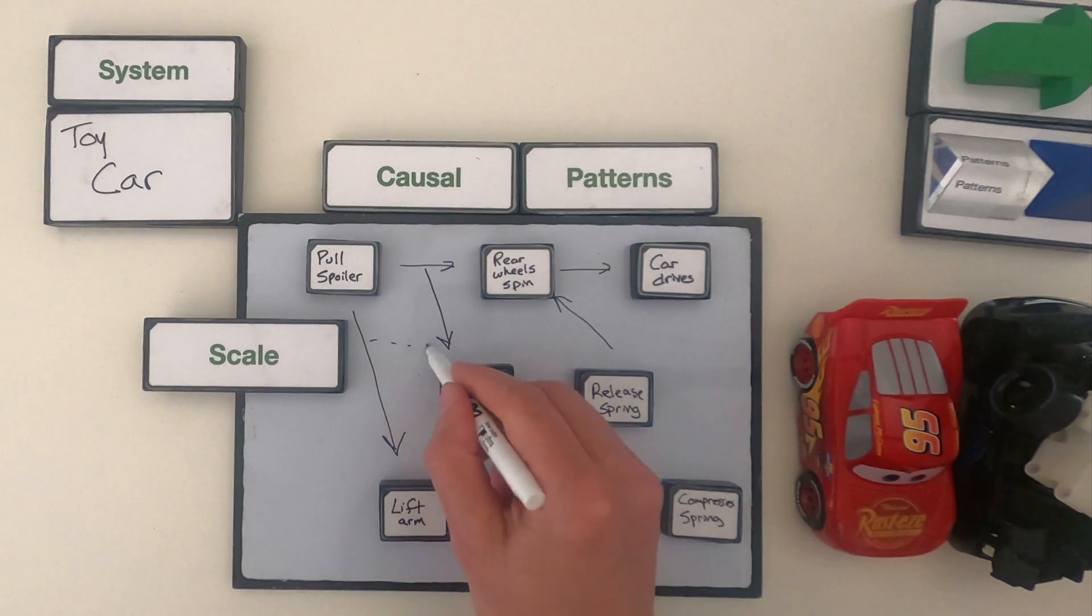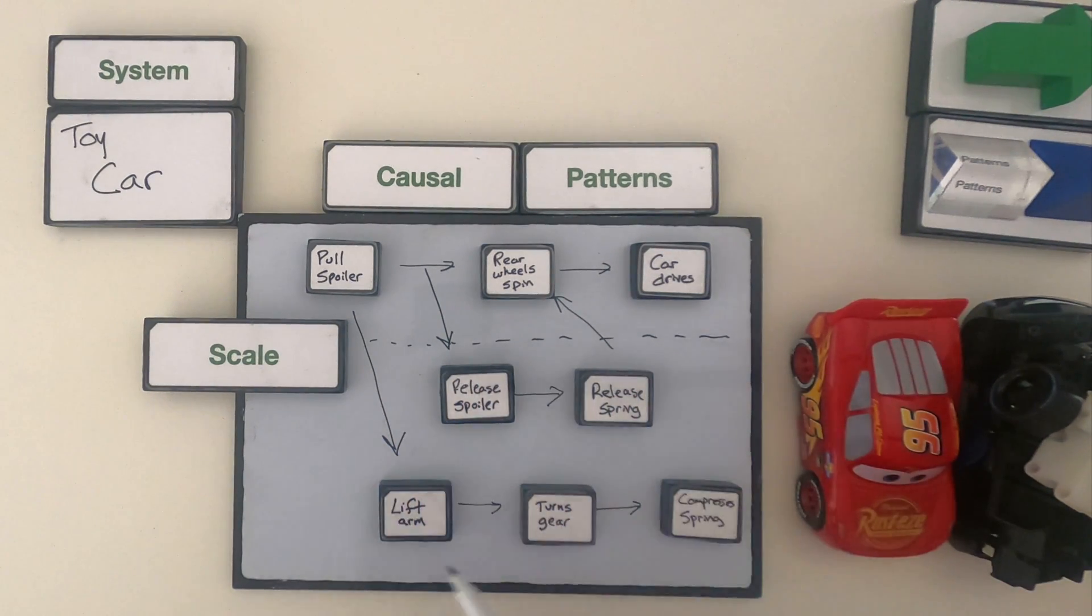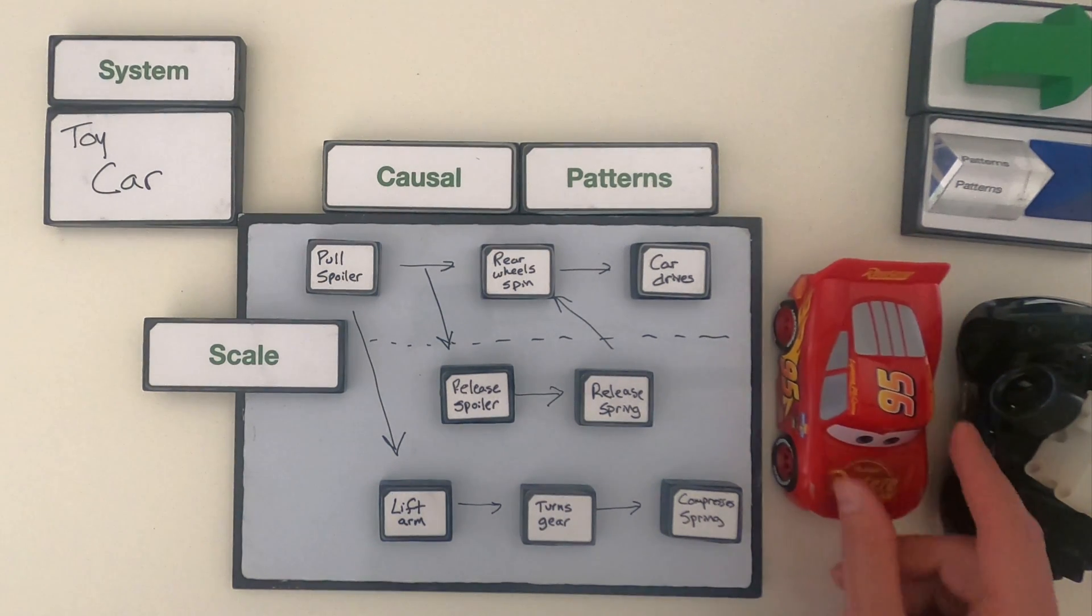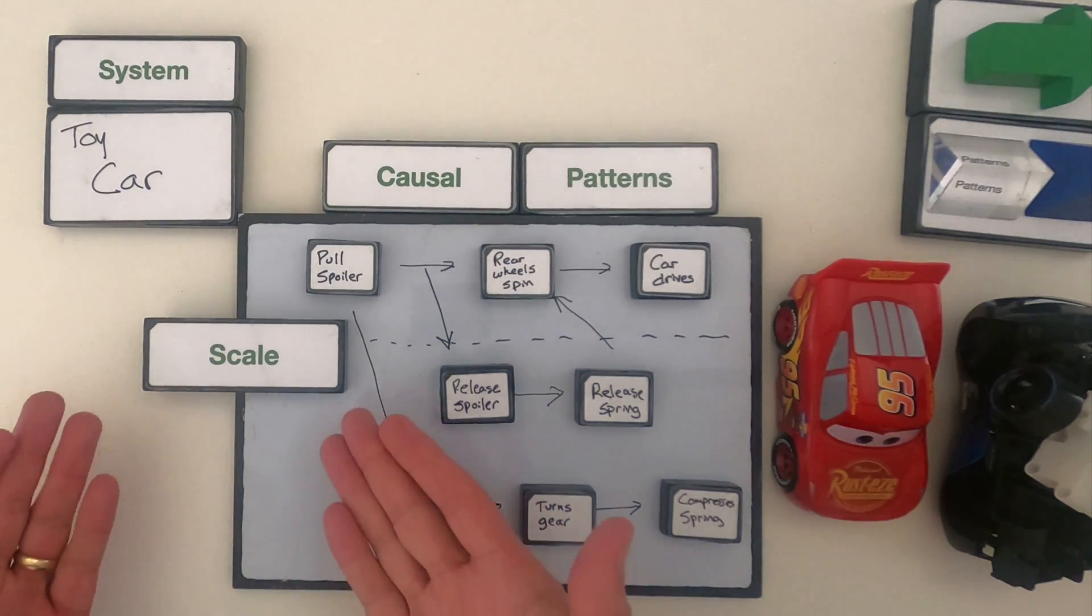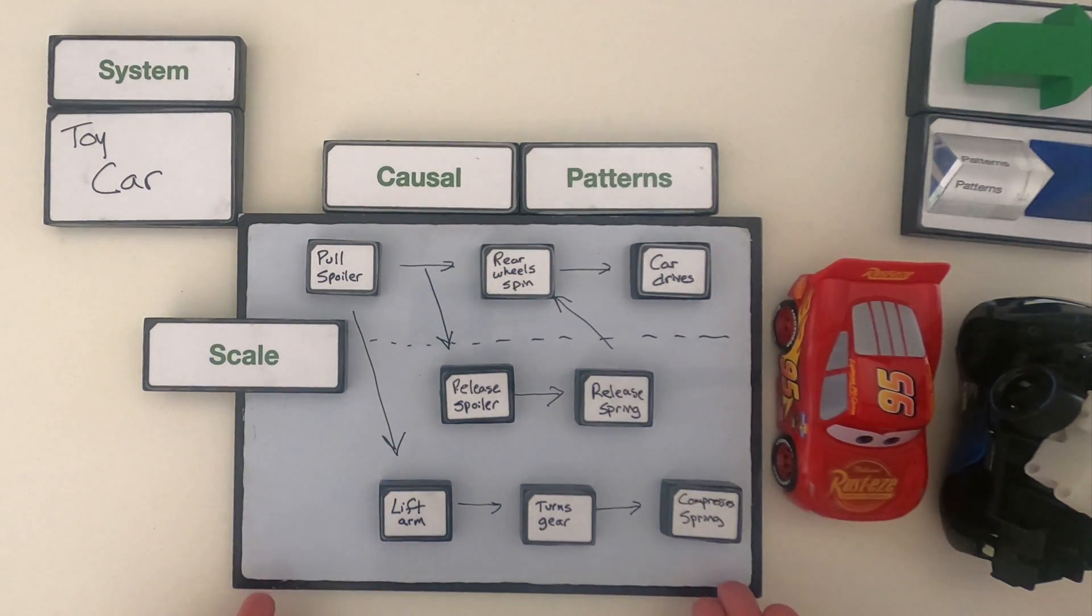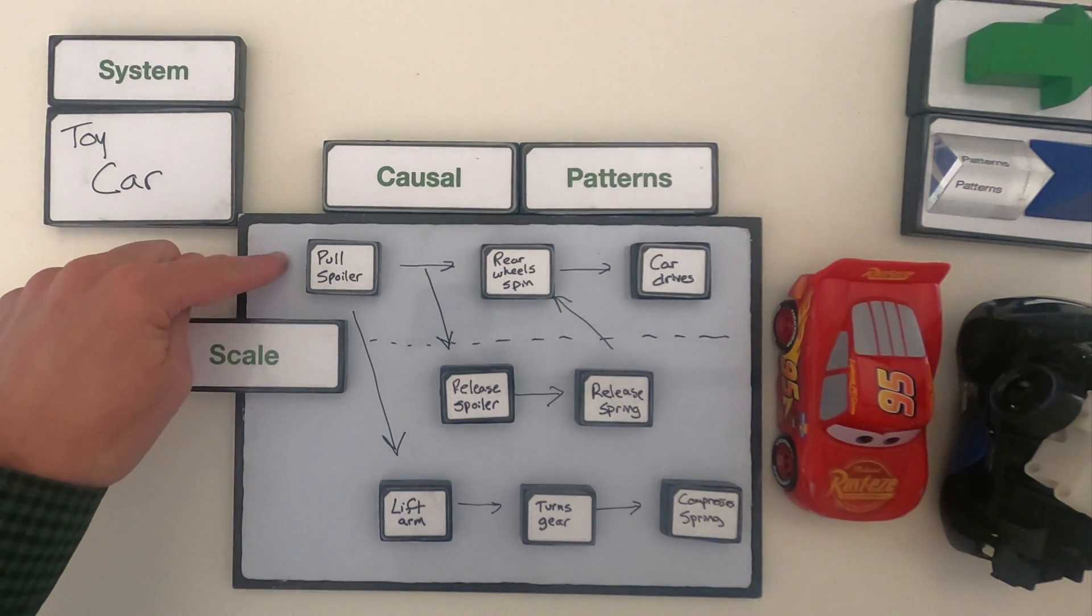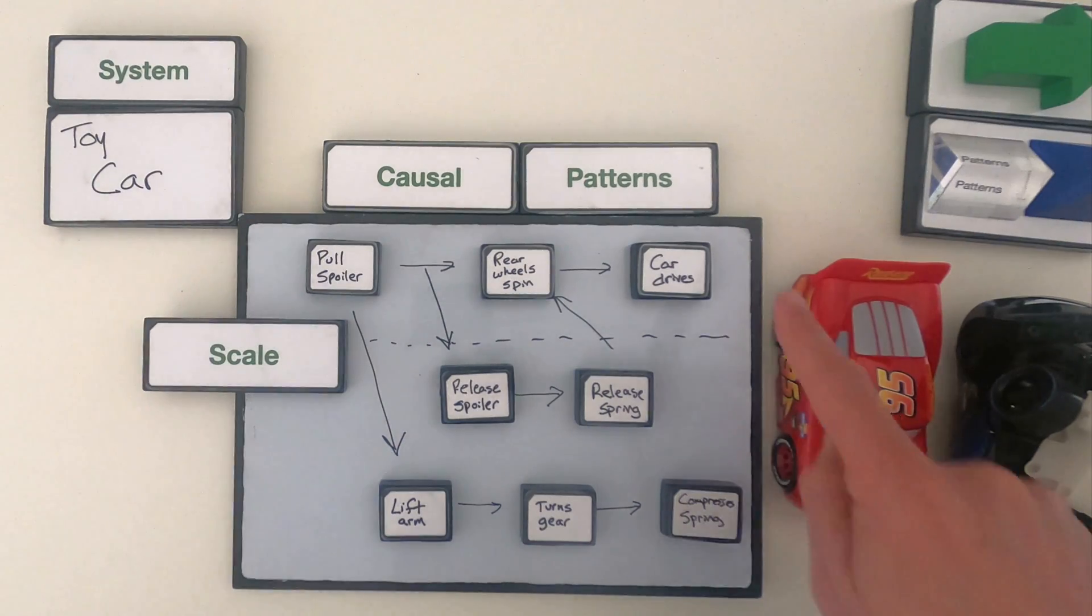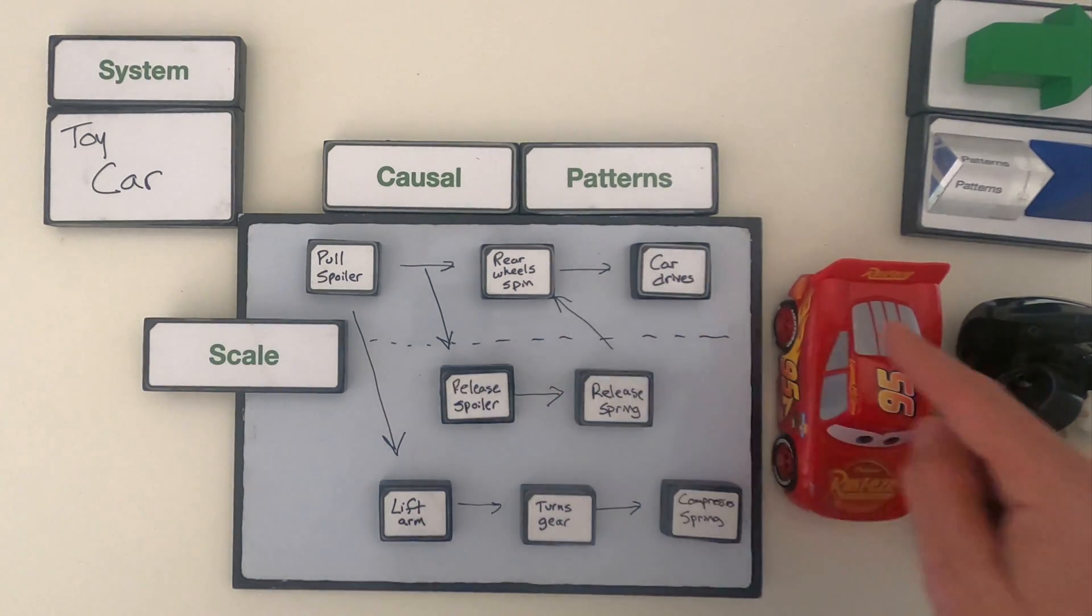We could represent everything below this dotted line as within the car, in other words the scale inside the car. Now this is pretty simple if we're looking at something like a car, but it'll become really important if we're looking inside like a chemical reaction or inside a cell what's happening at that scale. What kind of a pattern do I see? Even though it seems to branch, we would call this a linear pattern that always starts with pulling the spoiler down and then the car driving.